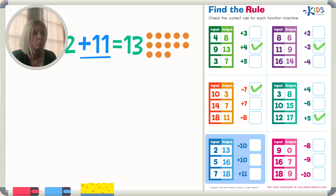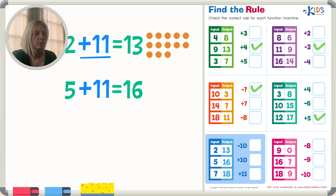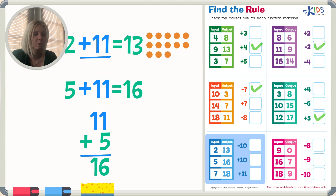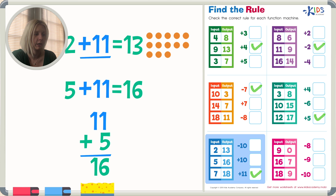I want to double check at least one more. 5 plus 11 equals 16 — let's write it as 11 plus 5. 5 plus 1 is 6, bring down the 1 is 16. So that's right. I'm going to put a check here — the rule for this blue function machine is plus 11.